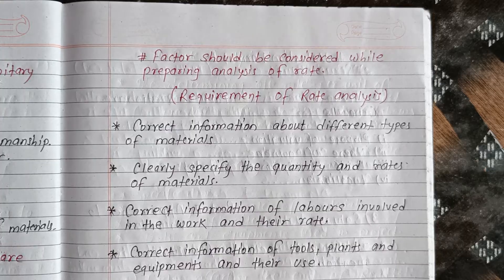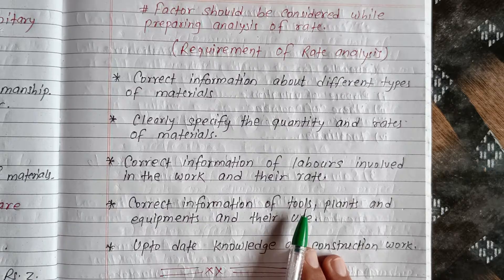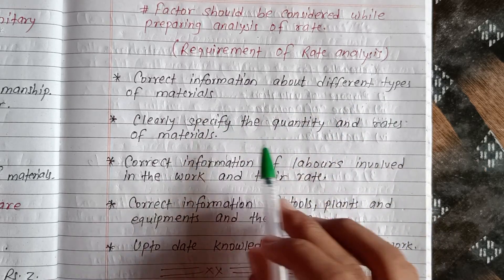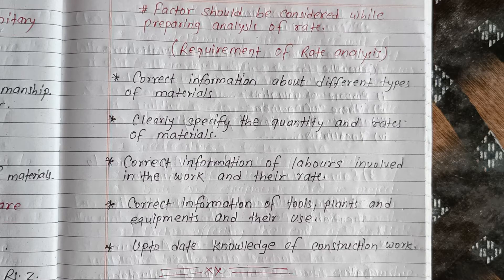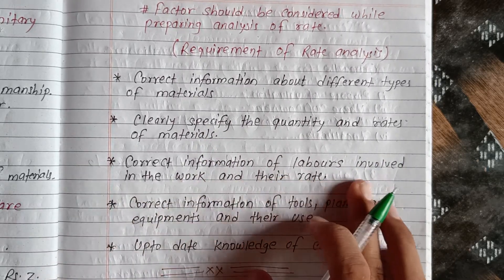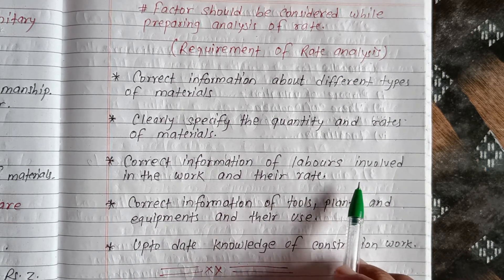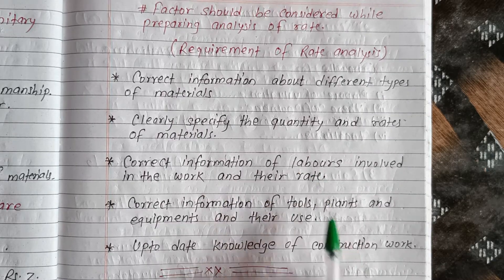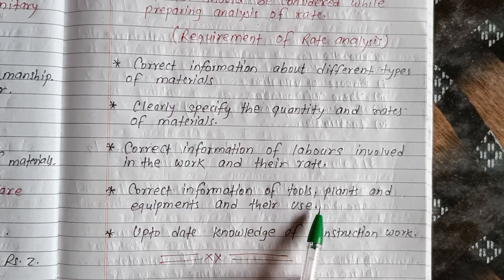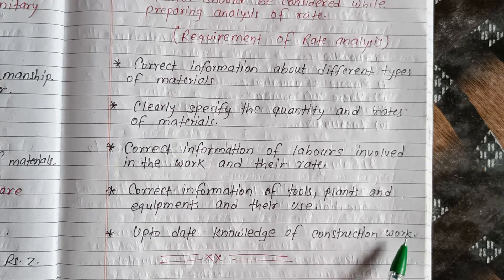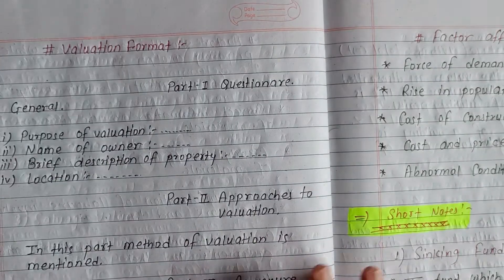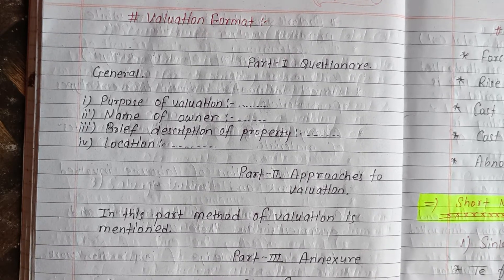An important question is: what factors should be considered while preparing an analysis of rate? Rate analysis requires correct information about different types of materials being used, the quality, quantity, and rate of materials clearly specified, correct information about the labour involved in the work and their rate, their skills and quality, and correct information about tools, plants and equipment, plus up-to-date knowledge of construction methods.